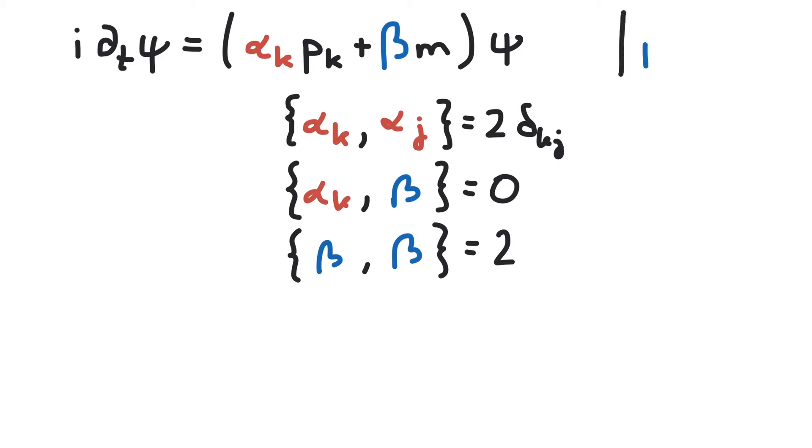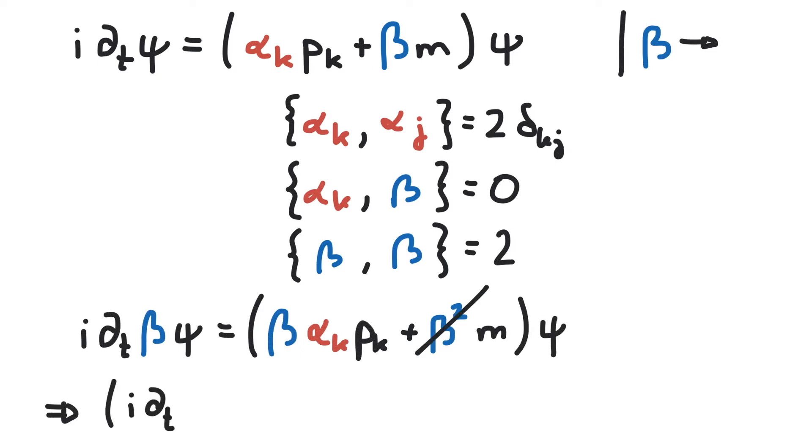This is our Dirac equation. We multiply by beta from the left and denote the momentum by a special derivative. Next we move all our terms to the left side of the equation, such that we have some terms that equal zero.